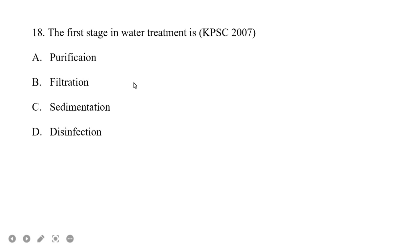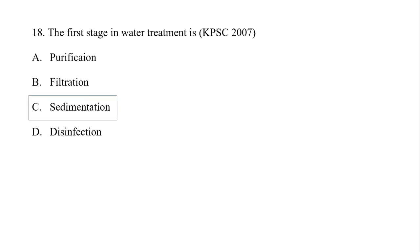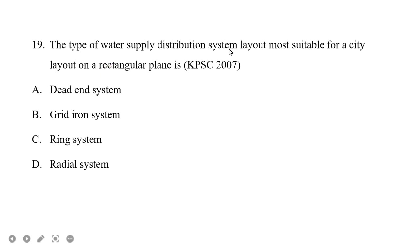The first stage in water treatment is sedimentation. The sequence is: sedimentation, filtration, and disinfection. The type of water supply distribution system layout most suitable for a city laid out on a rectangular grid plan is the grid iron system.